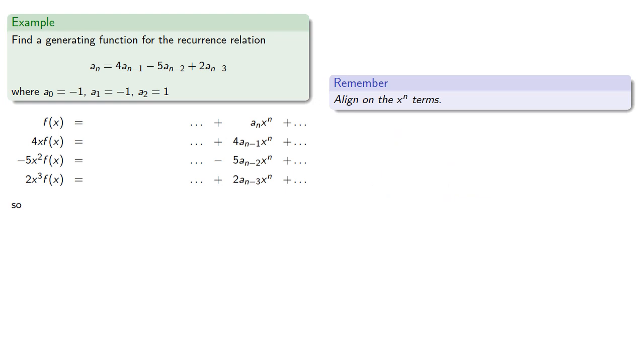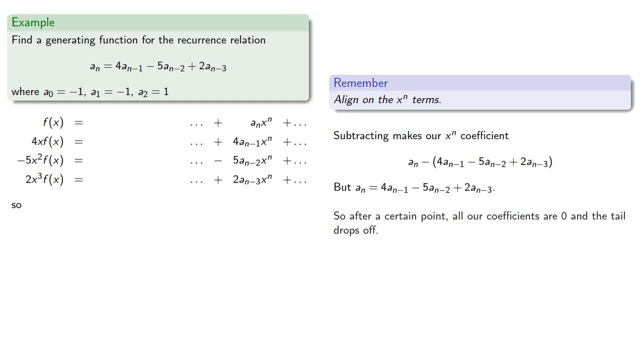Now because we've aligned on the x^n term, this means our x^n coefficients include something that looks like our recurrence relation. And in fact, if we subtract, our x^n coefficient will be... but from our recurrence relation we know that a_n is equal to the subtracted terms, which means that after a certain point all our coefficients are 0 and the tail drops out.